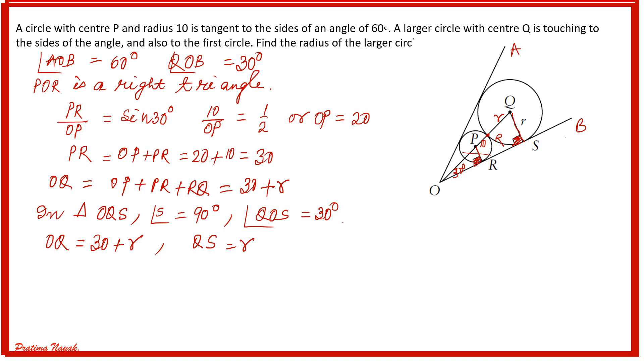And the perpendicular QS is equal to r, which I have to find out. Now I will go for trigonometry. So QS over OQ equals r over 30 plus r, which is again sine 30. Sine 30 is half.